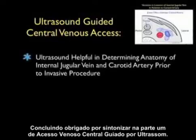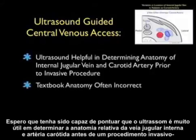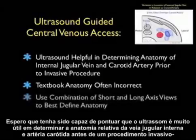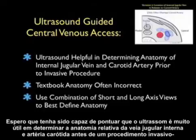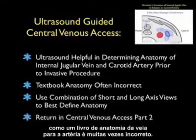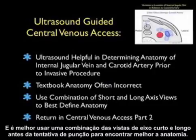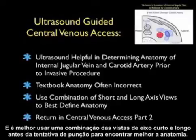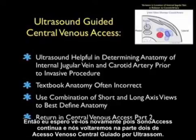In conclusion, thanks for tuning in for part one of ultrasound-guided central venous access. I hope I made the point that ultrasound is very helpful in determining the relative anatomy of the internal jugular vein and carotid artery prior to an invasive procedure, as the textbook anatomy of vein to artery is often incorrect. It's best to use a combination of short and long axis views prior to a puncture attempt to best define the anatomy. I hope to see you back as we return in central venous access part two.